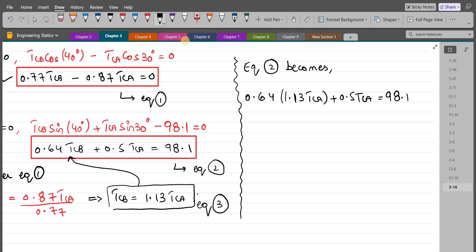So upon simplification, we have 1.2232 TCA equals 98.1. So upon further simplification, TCA comes out to be 80.2 Newtons. So this is our first answer.